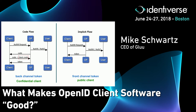The essential difference between implicit flow and code flow is that in the code flow, the client has client credentials. If you've ever called an API with an API key and secret, those are the client credentials — that's how we authenticate the client, and it makes it more secure. If you're writing a mobile app, it can be decompiled. If you're writing a JavaScript app, it's really hard to protect any secret in there. So in that case, we use the implicit channel and there are no client credentials.